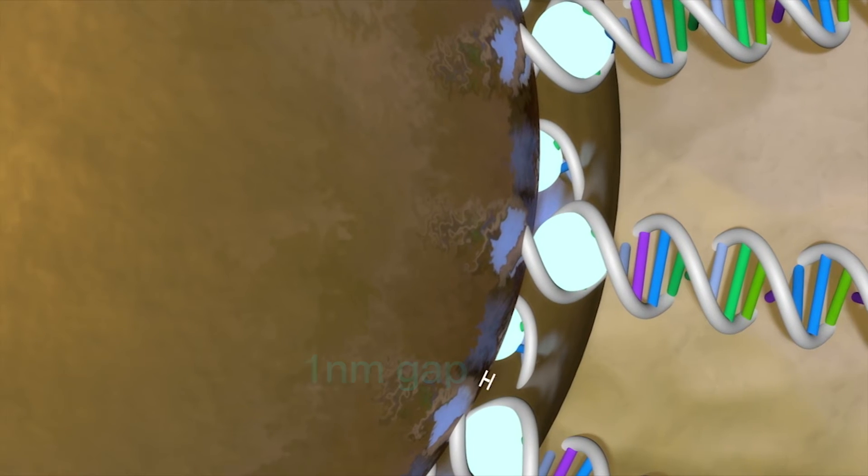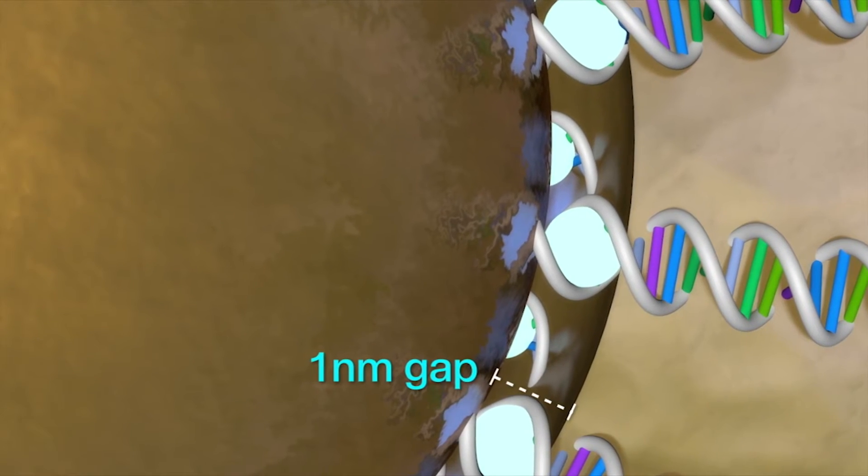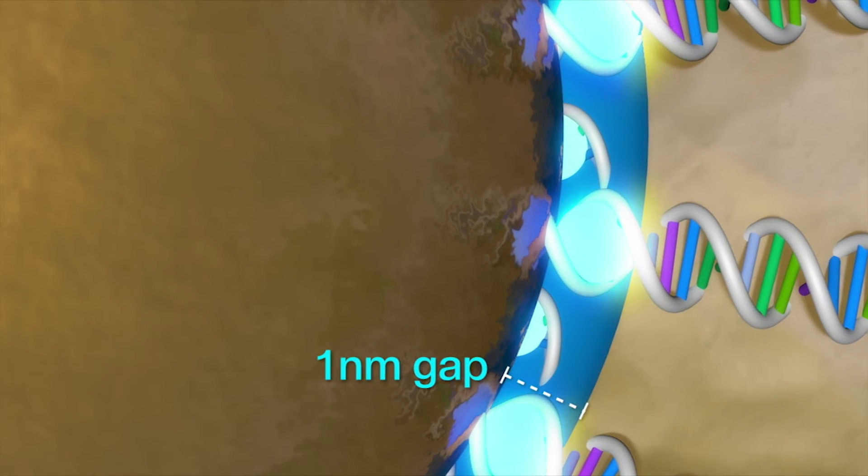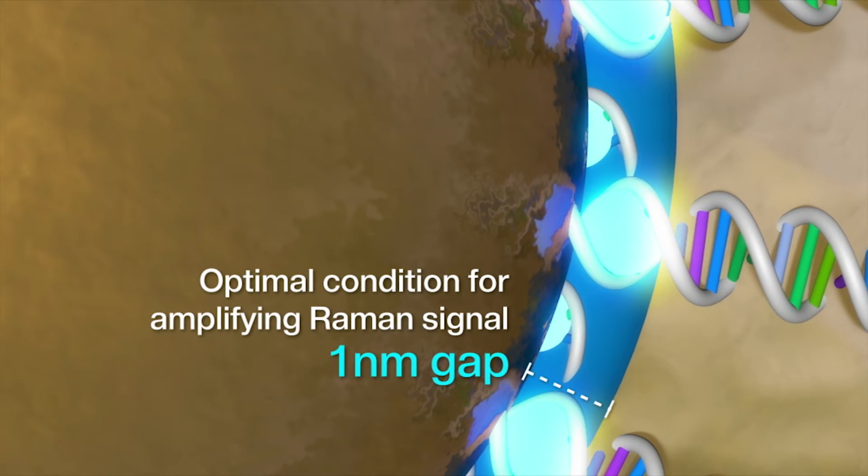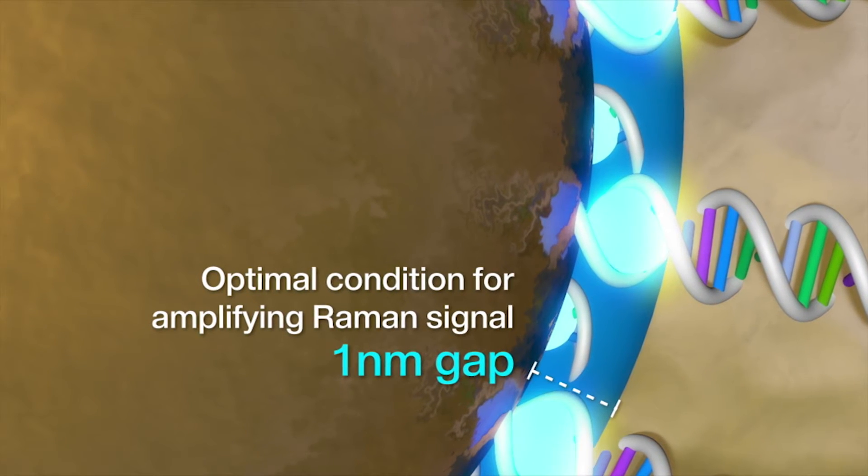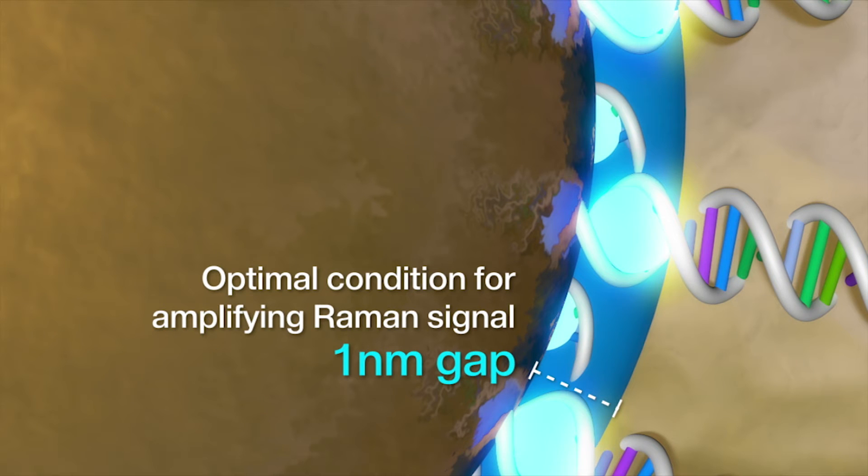When this gold shell deposition is preceded, gold does not stick onto the outer surface of the DNA modified gold core due to the DNA's surface potential. This forms a very thin nanogap surrounding all over the outer surface of the gold core about the size of 1 nanometer.